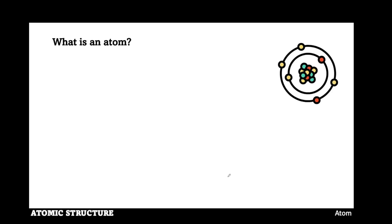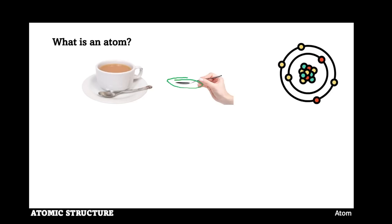What is an atom? Let us look at these two figures. If the teaspoon contains a little quantity of tea inside the mug, since the quantity of tea inside the teaspoon has the same ingredients as the tea inside the mug, you will agree with me that there will be no difference between the taste of tea inside the mug and the teaspoon. For illustrative purposes, the tea inside the mug can be regarded as an element and the tea inside the teaspoon can be labelled as an atom.